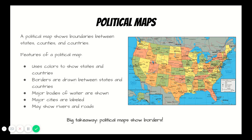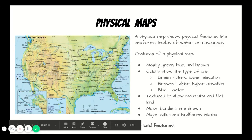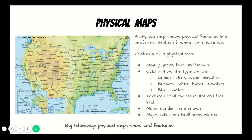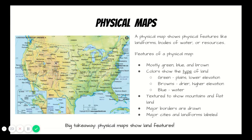The big takeaway about political maps is political maps show borders. The second type of map are physical maps. A physical map shows physical features like landforms, bodies of water, or resources. This is a physical map of the United States. On this map, I can see some of the mountain ranges. I can see rivers throughout the country. I can also see where there is flat land, such as plains or lower elevation.